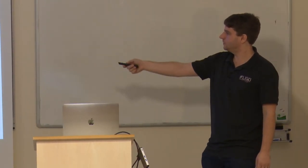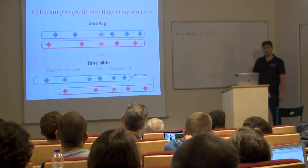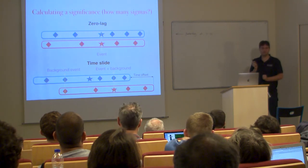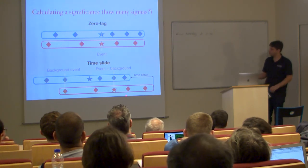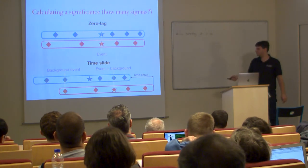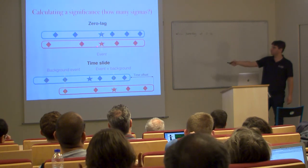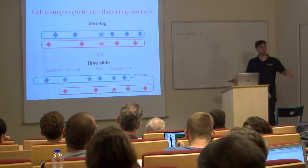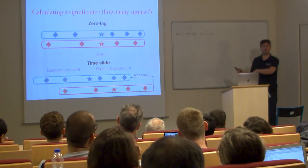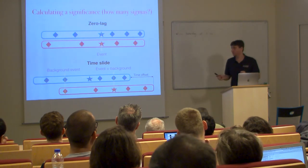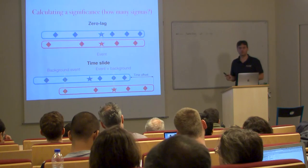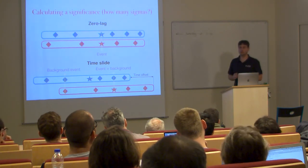A slight complication: when shifting the data, our real gravitational wave signals will sometimes line up with background events, contaminating the background. In PyCBC, we tend to leave these in, trusting that real signals should be more significant than this. If we've identified something as real, we remove those data points and then look for other signals underneath. There are a few approaches to handling this unavoidable problem of not being able to turn the universe off.